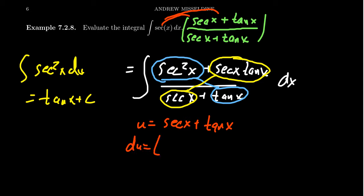Then du would equal, the derivative of secant is secant x tangent x, the derivative of tangent is secant squared x dx. And that's exactly the situation we have right here.